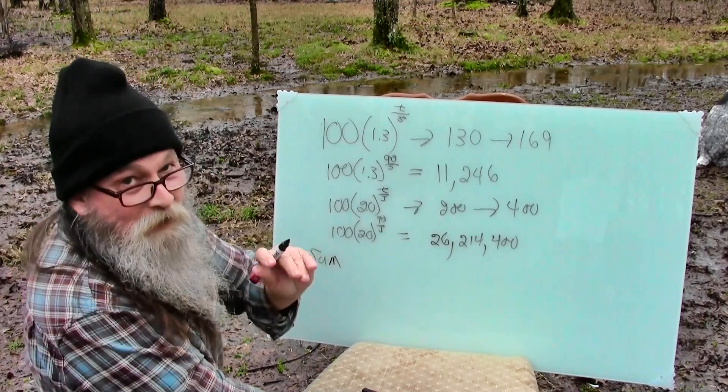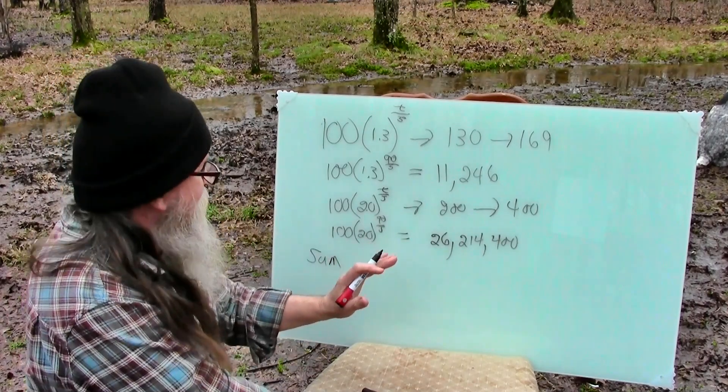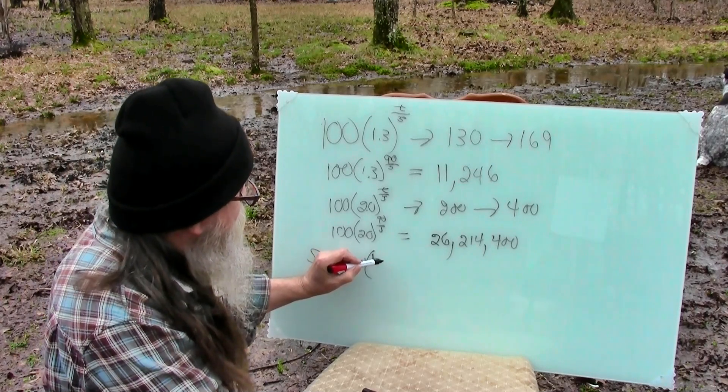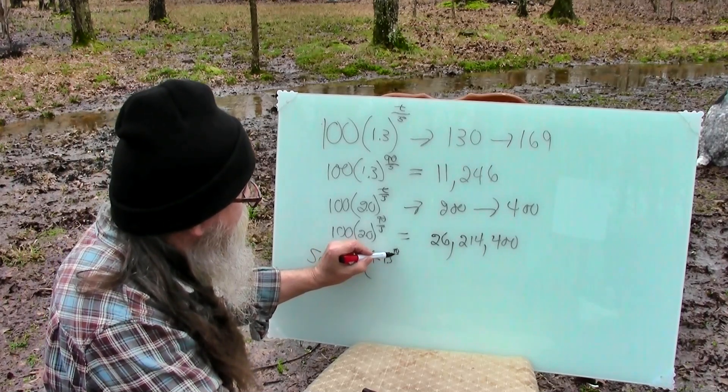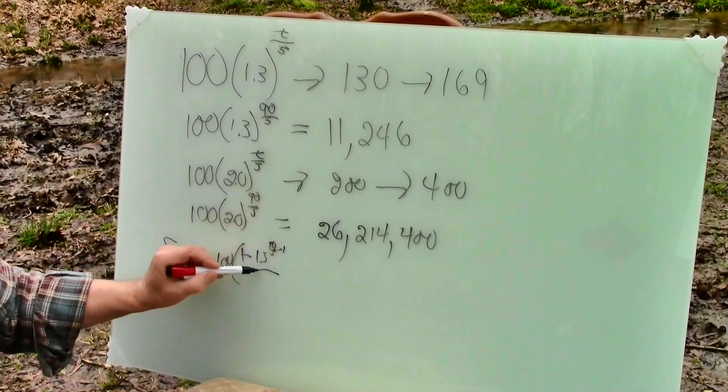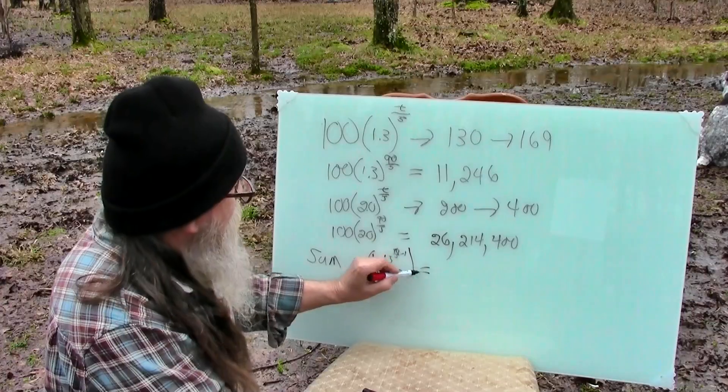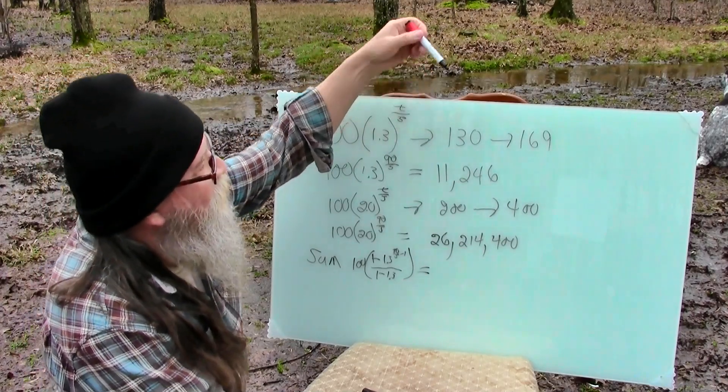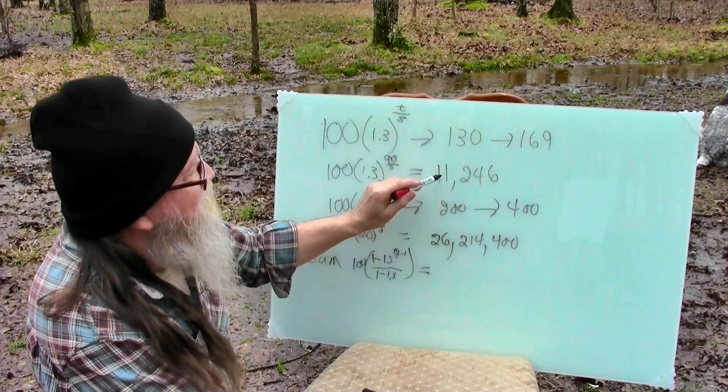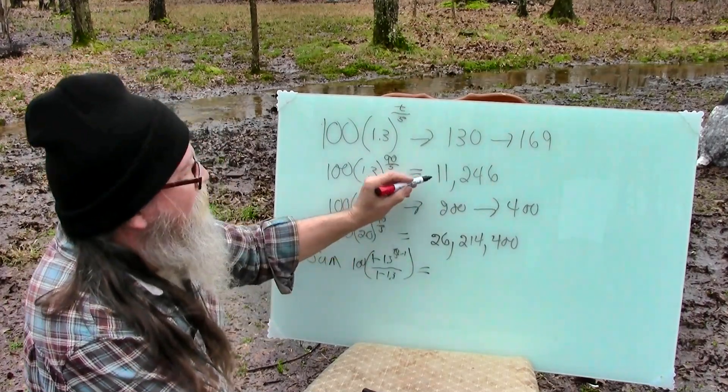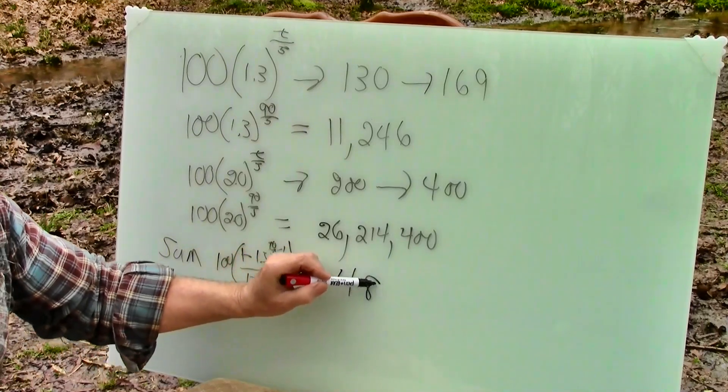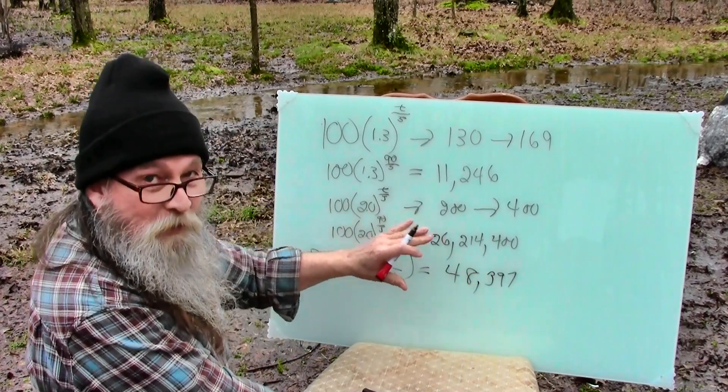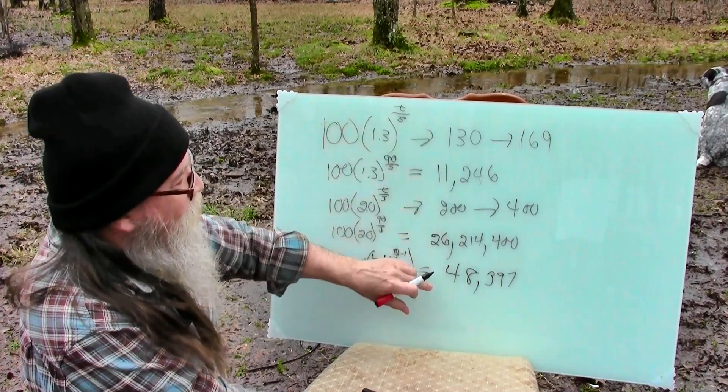Let's sum these things up. Now, this is complicated math. So just let me write it out and don't stress. So if we sum up our 1.3s, add the 100 plus 130 is 230 plus 169 and we add them all the way up to this last 90 days of 11,246, we get 48,397 total people have been infected from the original 100 out over 90 days.